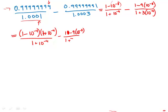Now notice what we get: there is the same factor in the numerator and denominator, so that cancels. Now what we're left with is one minus ten to the negative fourth as the quotient of the first fraction.